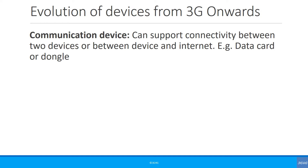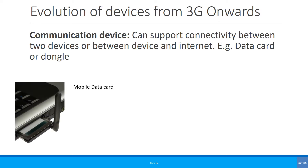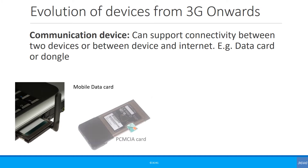We also had another category of devices called communication devices. They supported connectivity between two devices or between the device and the internet. For example, the mobile data card, also referred to as PCMCIA, hardly used anymore.